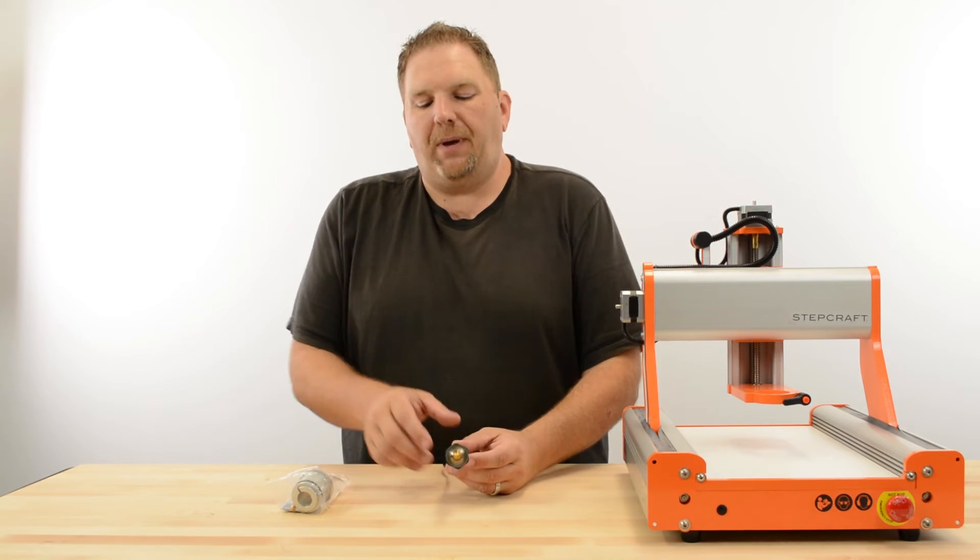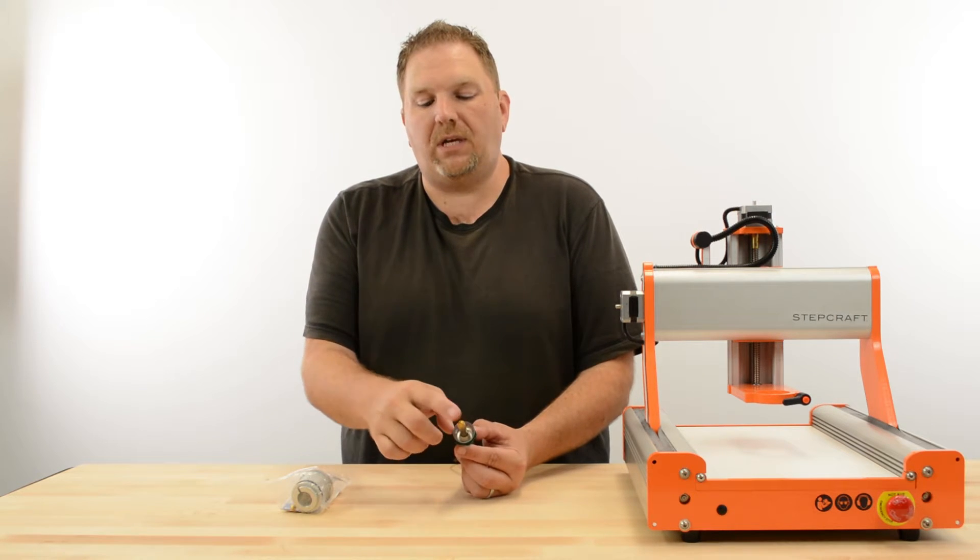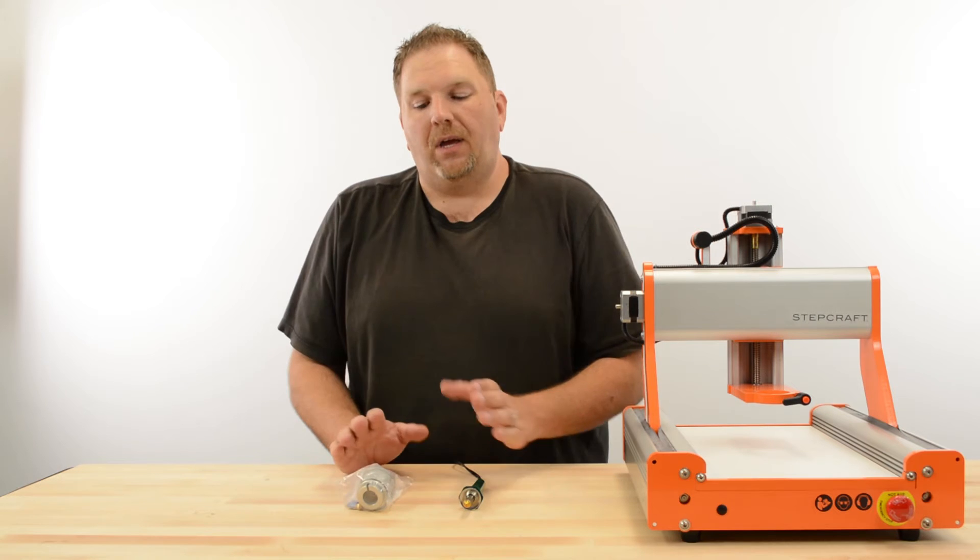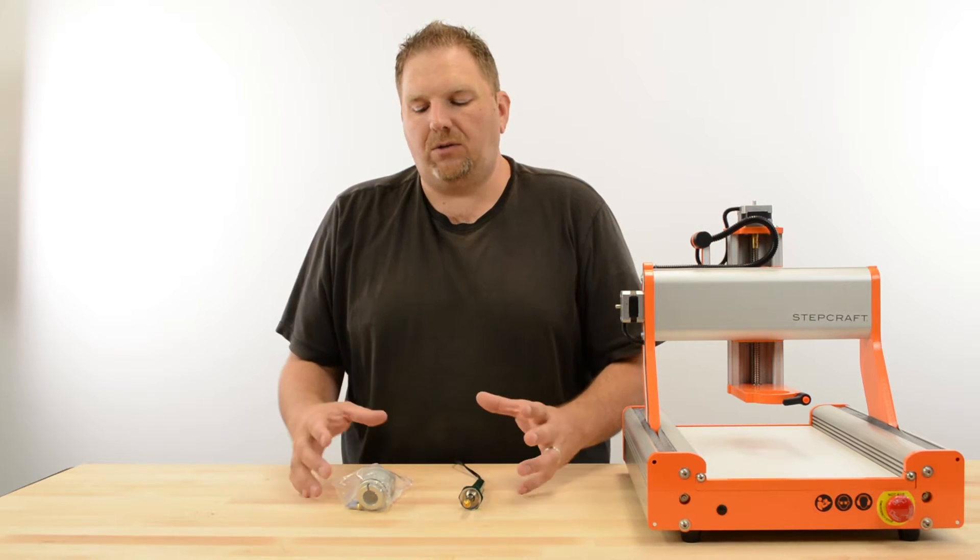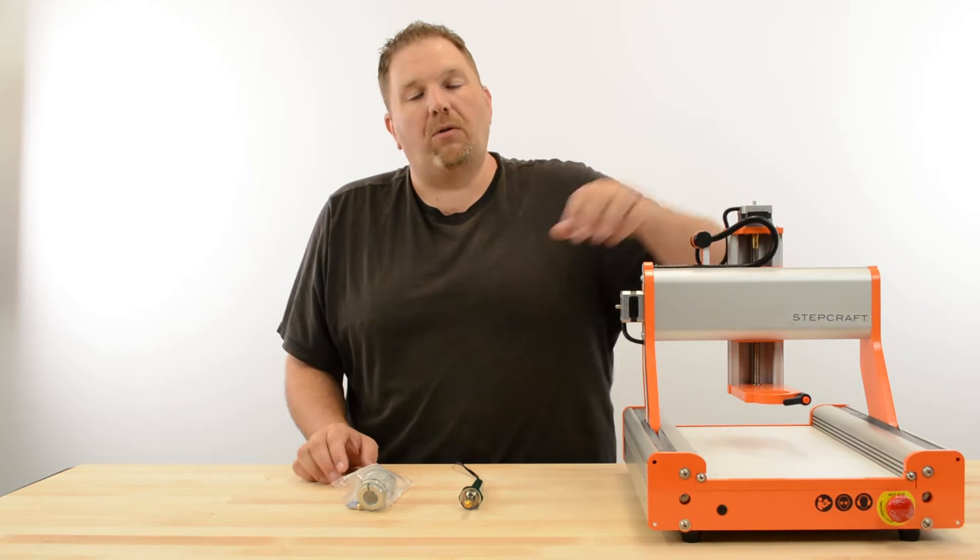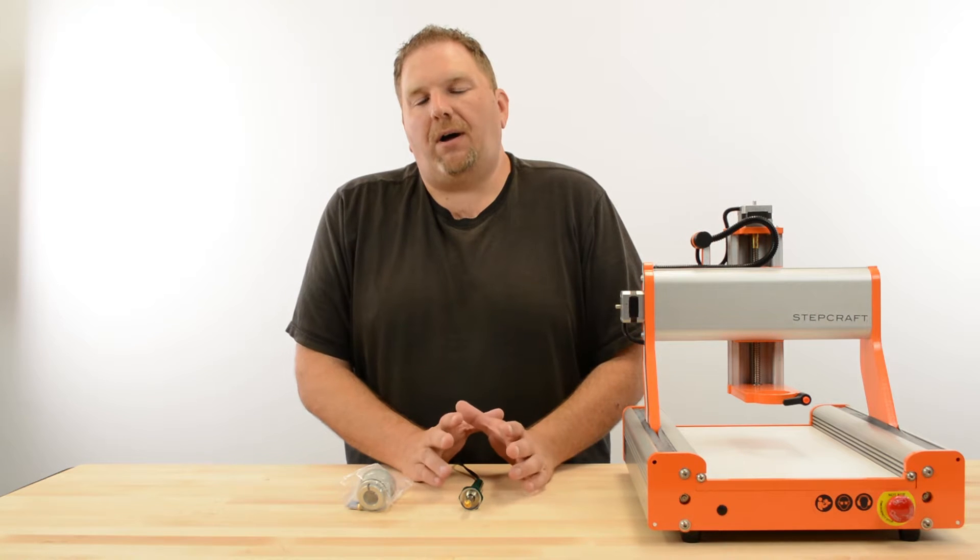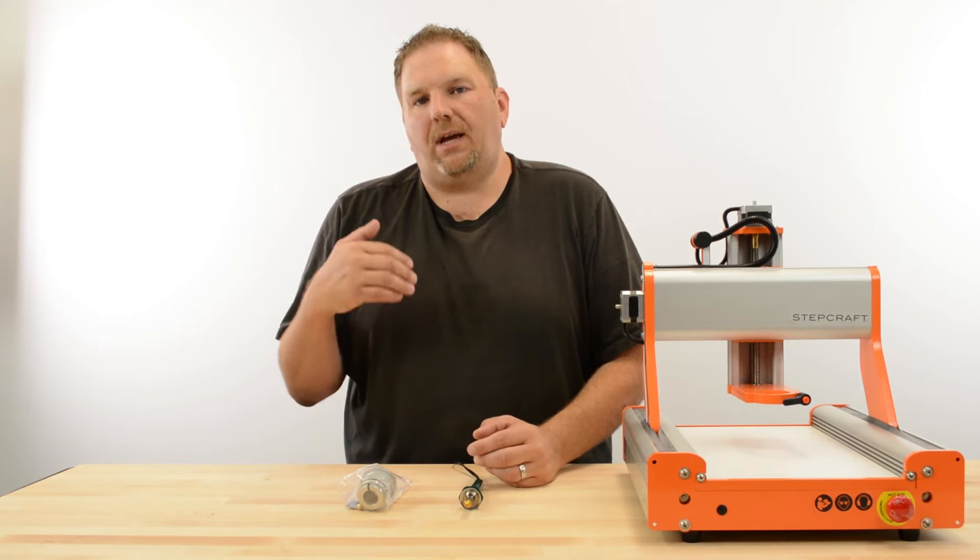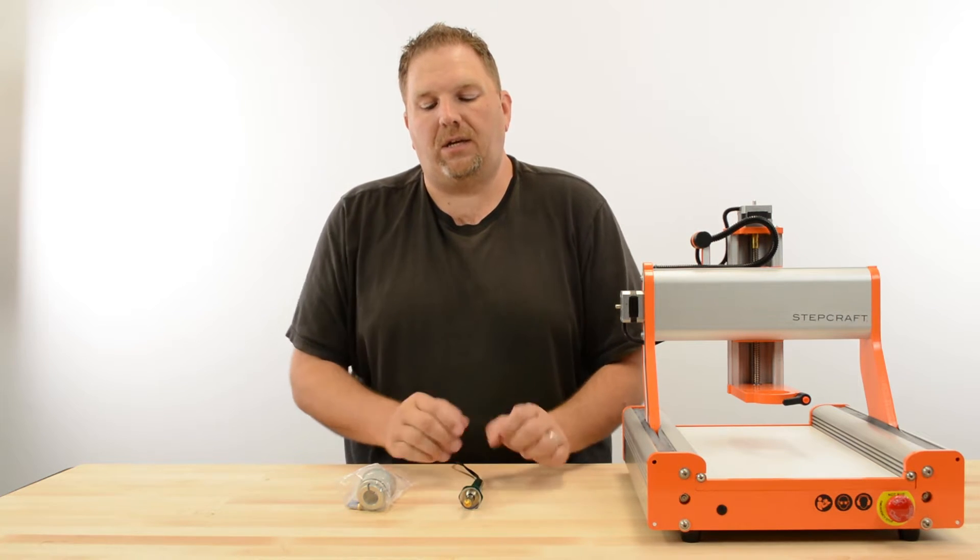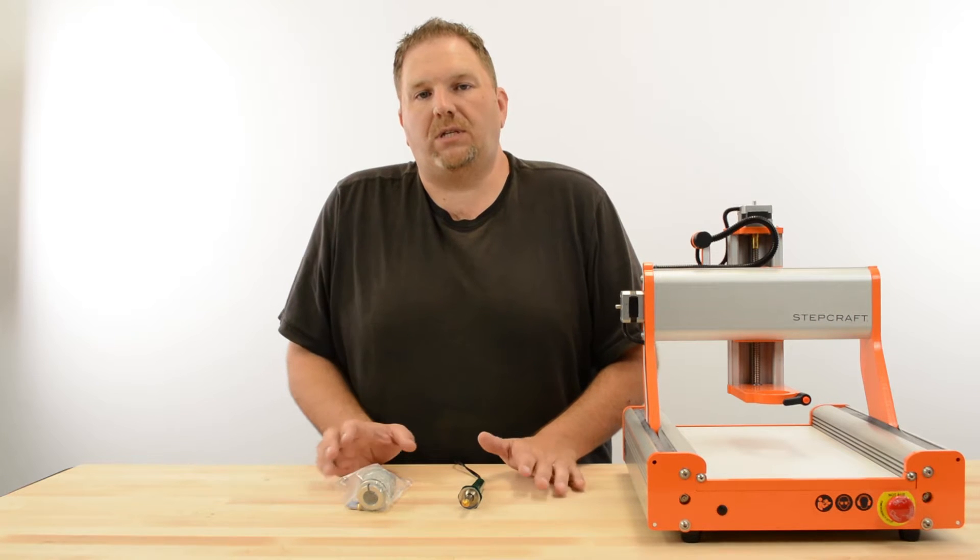When you order the wood burning pen kit, you get the wood burning pen itself with a tip as well as a spring loaded adapter bracket. I'm going to show you how to assemble the bracket and how to assemble the pen inside the bracket and load it onto the machine. I will have a second video that will talk about how to import an image and turn that into a tool path to properly set up and utilize the wood burning pen to create the G-code for UCCNC.